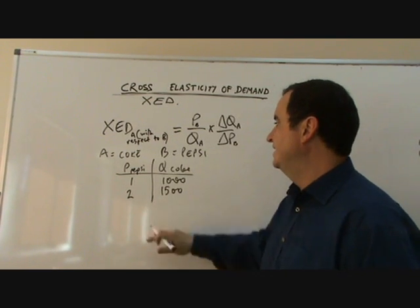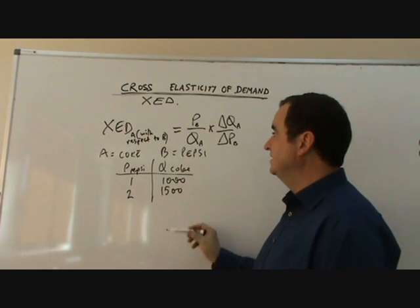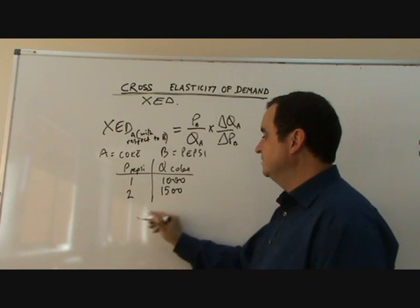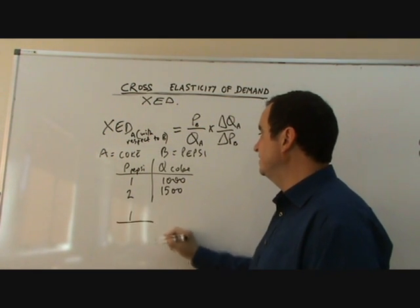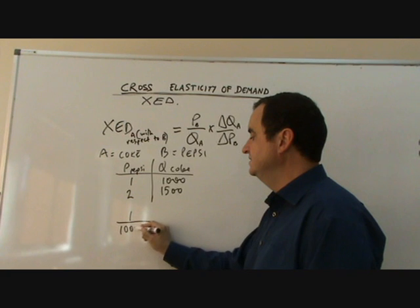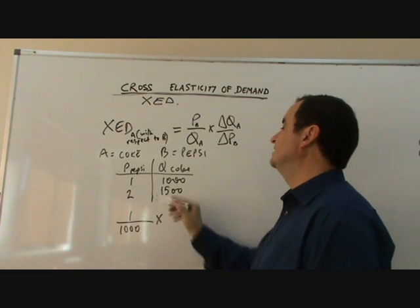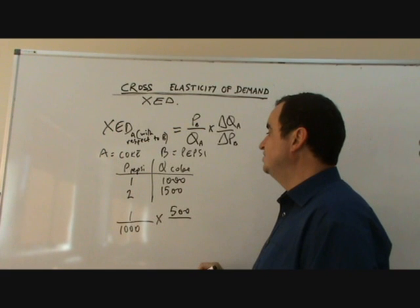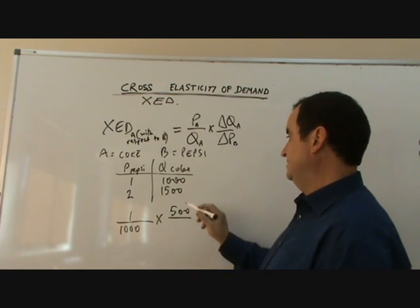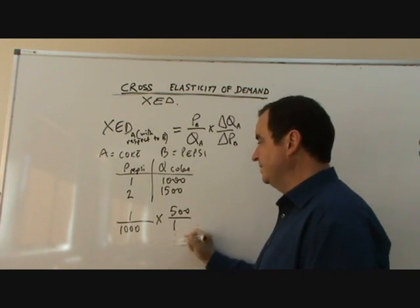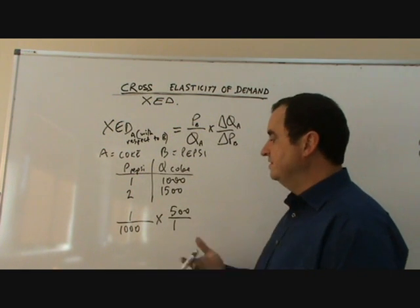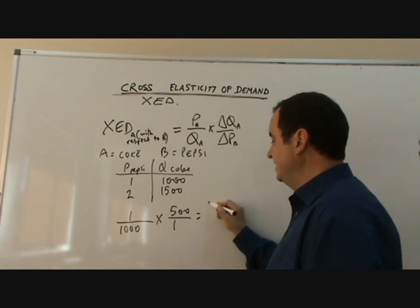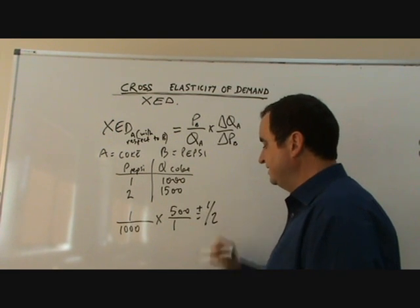Let's put that into our equation and we have the price of B. The price of Pepsi was originally 1 and the quantity of Coke being bought was originally 1,000 times change in quantity, 500, divided by change in price, which is 1. It went up by 1. And if you work that out, it's 500 over 1,000. It comes out to a half. And it's plus a half.